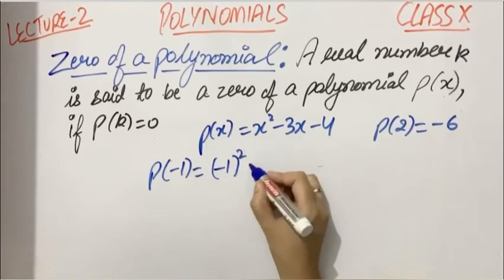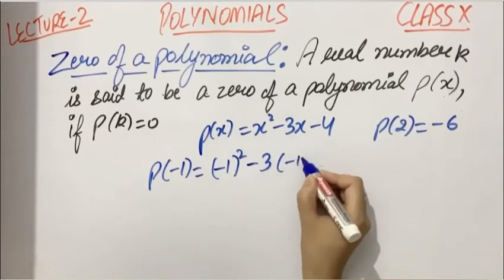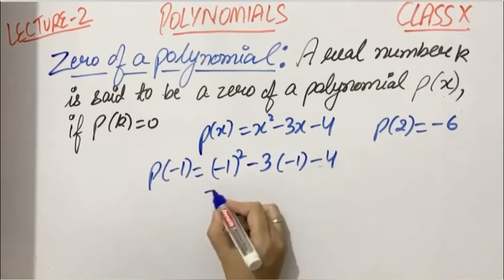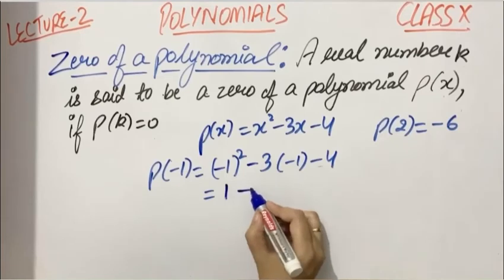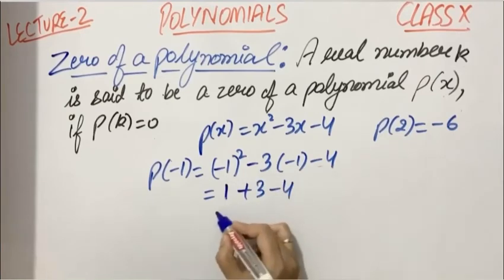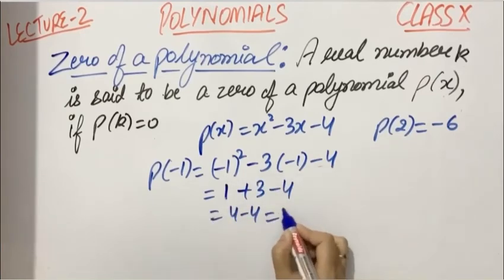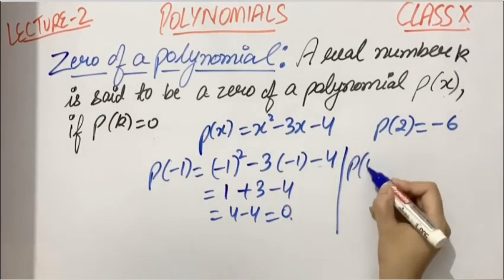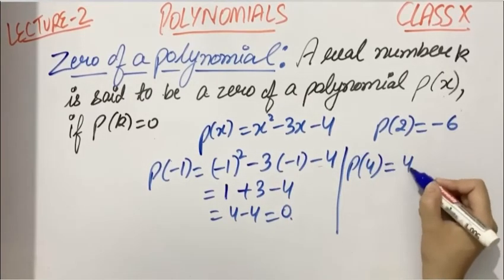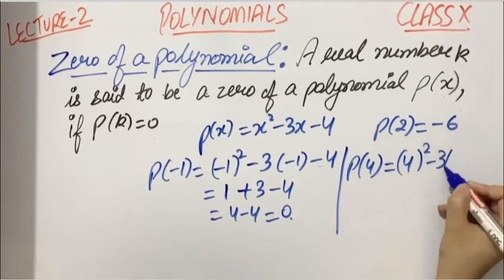P(-1) = (-1)² - 3(-1) - 4. Because of the square, it will become positive, so 1 + 3 - 4, and 4 - 4 is 0.